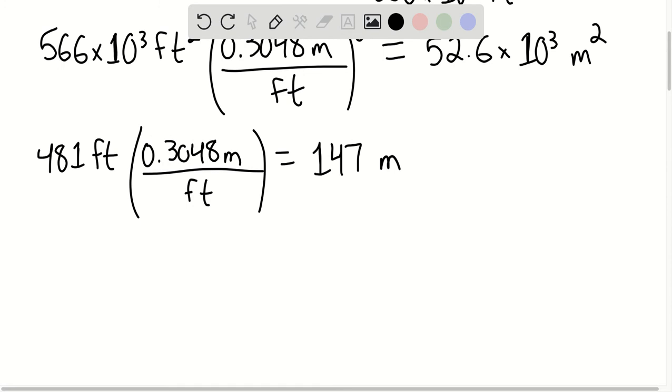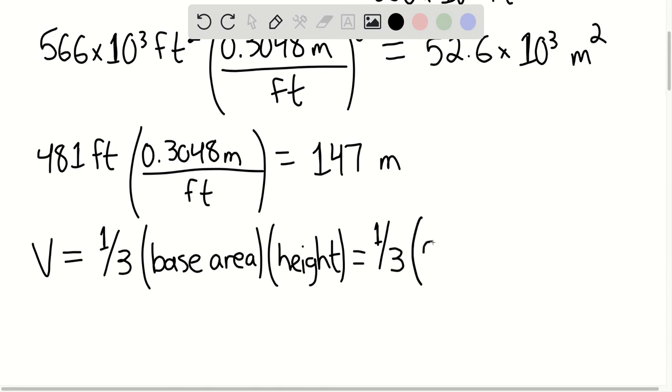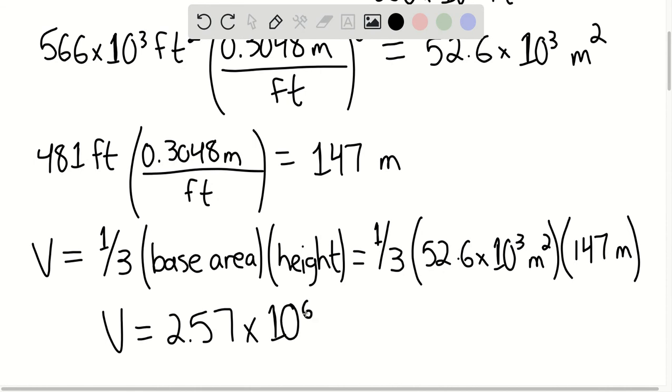We can find the volume of the pyramid. Volume is one-third multiplied by the base area multiplied by the height. So we have one-third multiplied by 52.6 times 10 to the third square meters multiplied by 147 meters. We have the volume equaling 2.57 times 10 to the sixth cubic meters. This would be our final answer. That is the end of the solution. Thank you for watching.